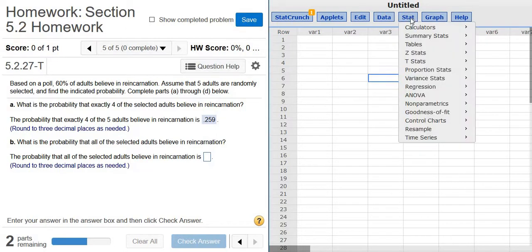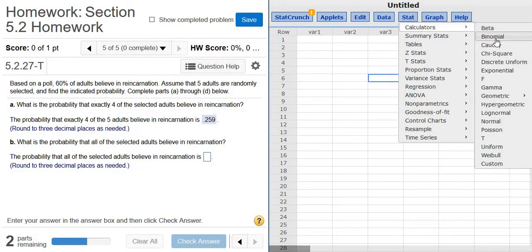So you go to stat, calculators, binomial. Again, it's stat, calculators, binomial. Then you left-click where it says binomial.